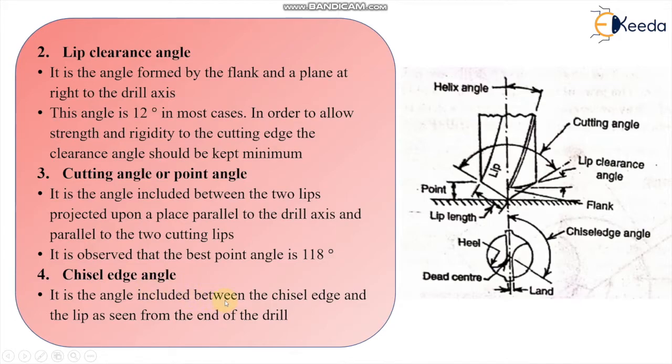Then the chisel edge angle. You can see here, this is the chisel edge angle. It is the angle included between the chisel edge and the lip as seen from the end of the drill. You have to look at this end of the drill here. From bottom, you can see this is the end, like this is the chisel edge angle.